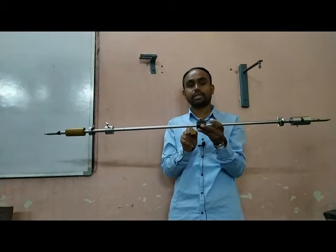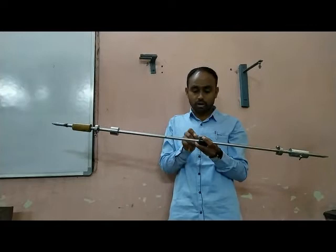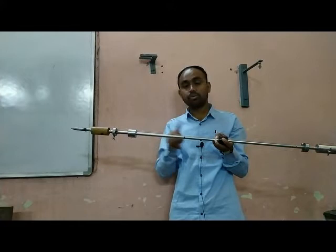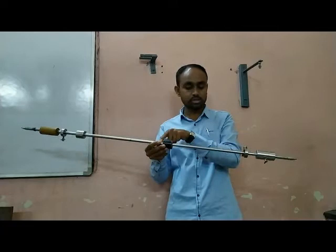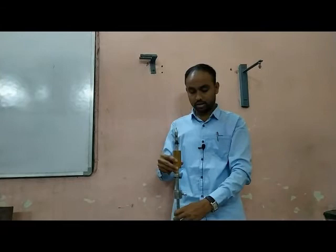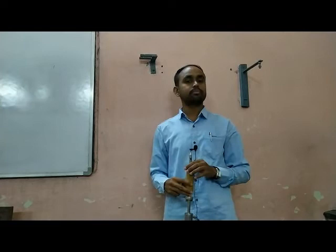Once balanced, mark that point as the centre of gravity. Measure the distance from K2 to the centre of mass — that is L2. Similarly, measure the distance from K1 to the centre of mass — that is L1. Once you have L1, L2, T1, and T2, all four values are known and everything else is calculation.